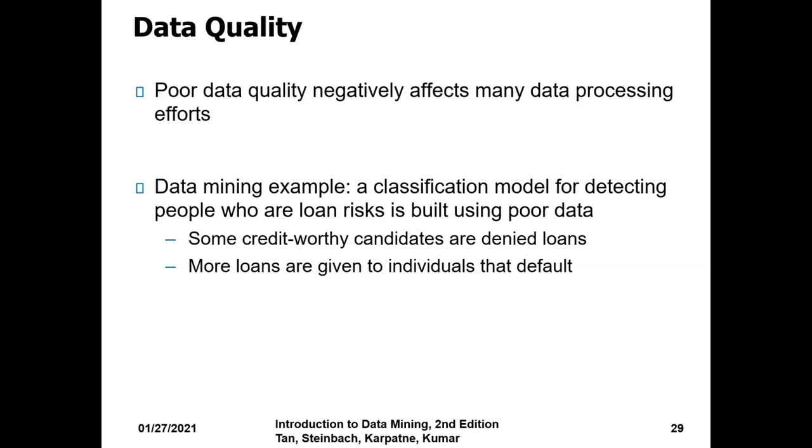Data mining example: a classification model for detecting people who are loan risks is built using poor data. In this case, if you build your model on poor data, some credit-worthy candidates are denied loans and more loans are given to individuals that are defaulters.